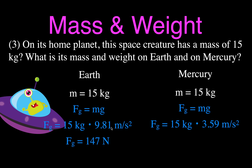For Mercury, the acceleration due to gravity is 3.59 meters per second squared — not quite half of Earth's, but approximately so. Multiplying the mass times that acceleration, he would weigh 54 Newtons on Mercury. The mass stays the same at 15 kilograms; only the weight changes. Higher acceleration due to gravity means more weight; lower acceleration means less weight. So we solved for force, mass, and gravity using our weight equation, and compared what it would be on Earth and Mercury.